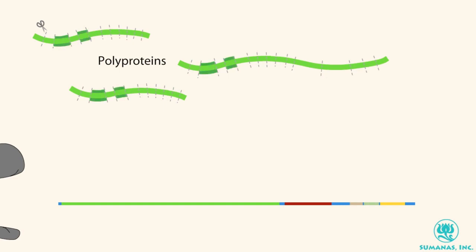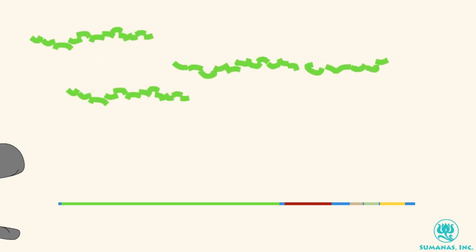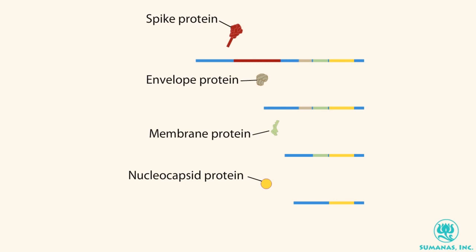The remaining one-third of the genome at the 3' end contains overlapping open reading frames, encoding four major structural proteins which act as components of the mature virus. These are spike, membrane, envelope, and nucleocapsid proteins.